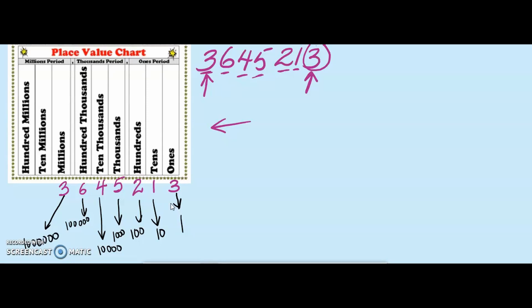Notice that each place value is 10 times the place value to its right. So 10 is 10 times 1. 100 is 10 times 10. 1,000 is 10 times 100, and so on.